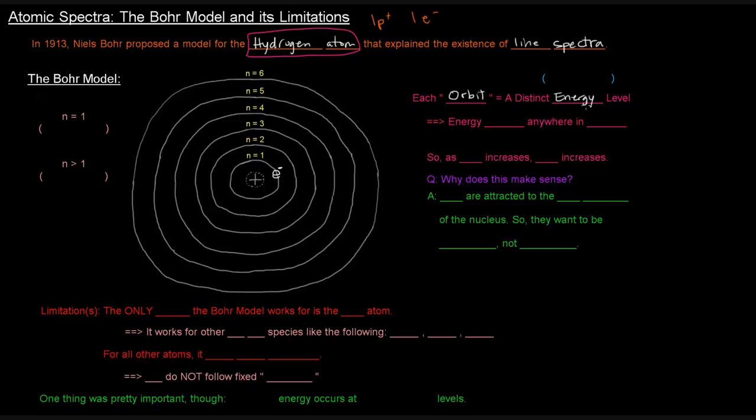Each of these orbits was at a distinct energy level, which means that the energy here was quantized. So if an electron is in a certain orbit, for instance, if it's in the n equals one orbit, anywhere in that orbit, it doesn't matter where it is. As long as it's in that orbit, the energy of it is the same anywhere in that orbit. The closer the electron is to the nucleus, the lower in energy it is. And the further away it is, the higher in energy it is.